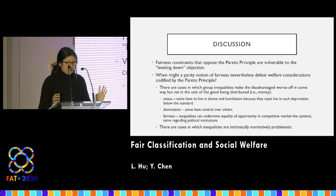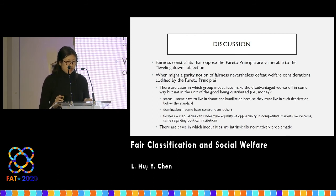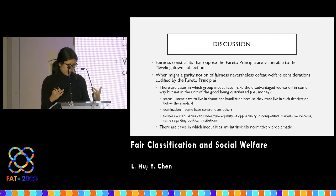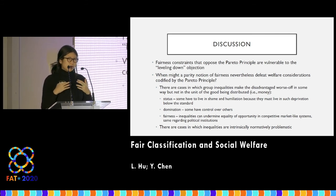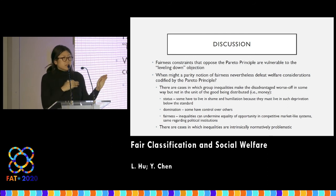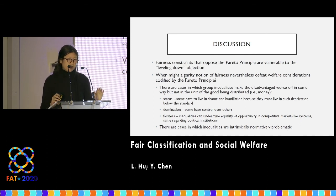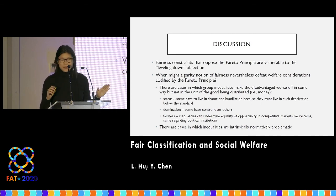Fairness constraints that oppose the Pareto principle are vulnerable to what's called in philosophy the leveling down objection, which basically says: if we think about fairness as just fundamental equality, there may be no intrinsic moral worth, because we might prefer cases in which everyone is worse off — and there seems to be something unintuitive about that. I don't personally buy that view, but I think there are cases where fairness considerations do nevertheless defeat welfare considerations.